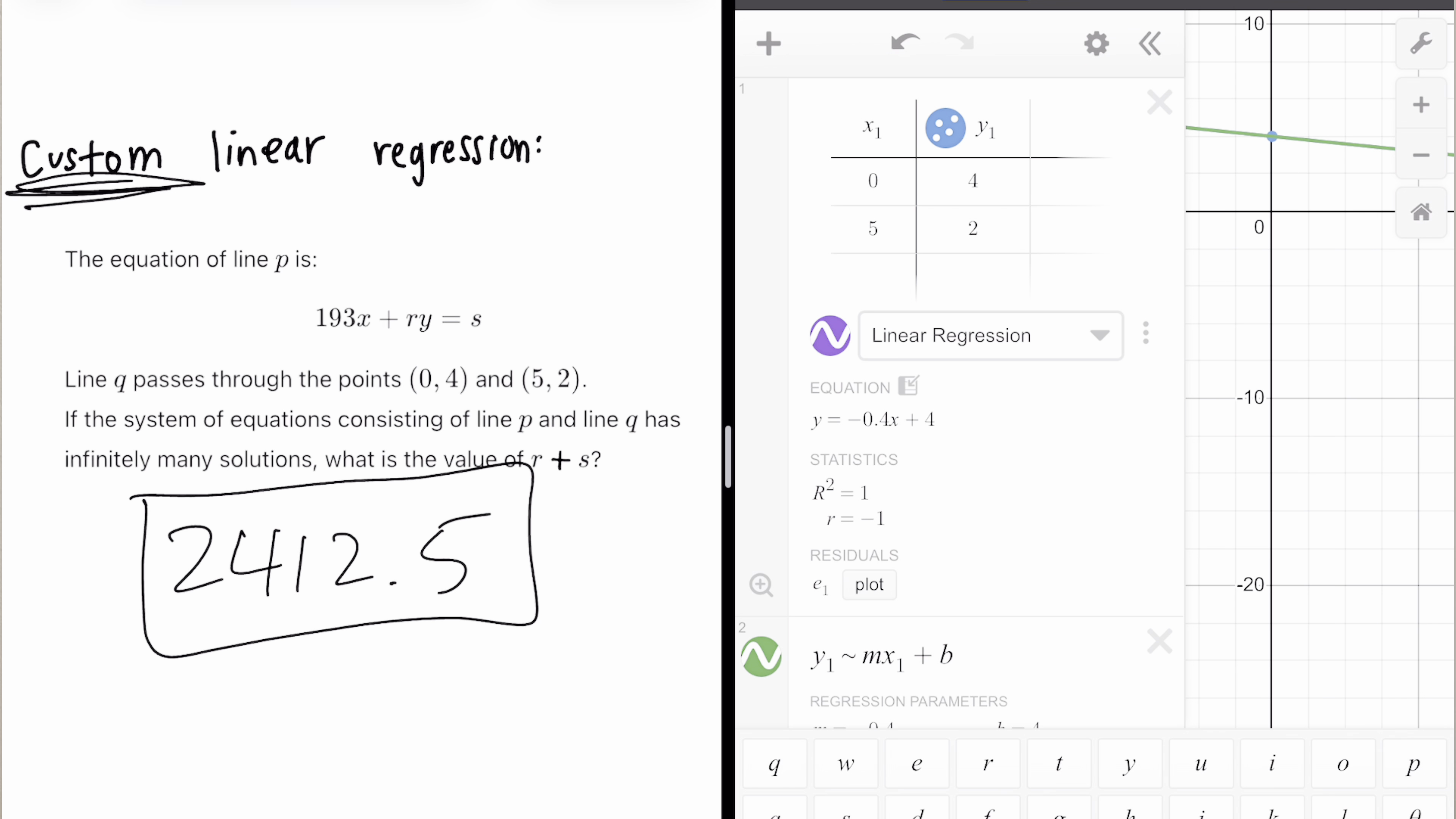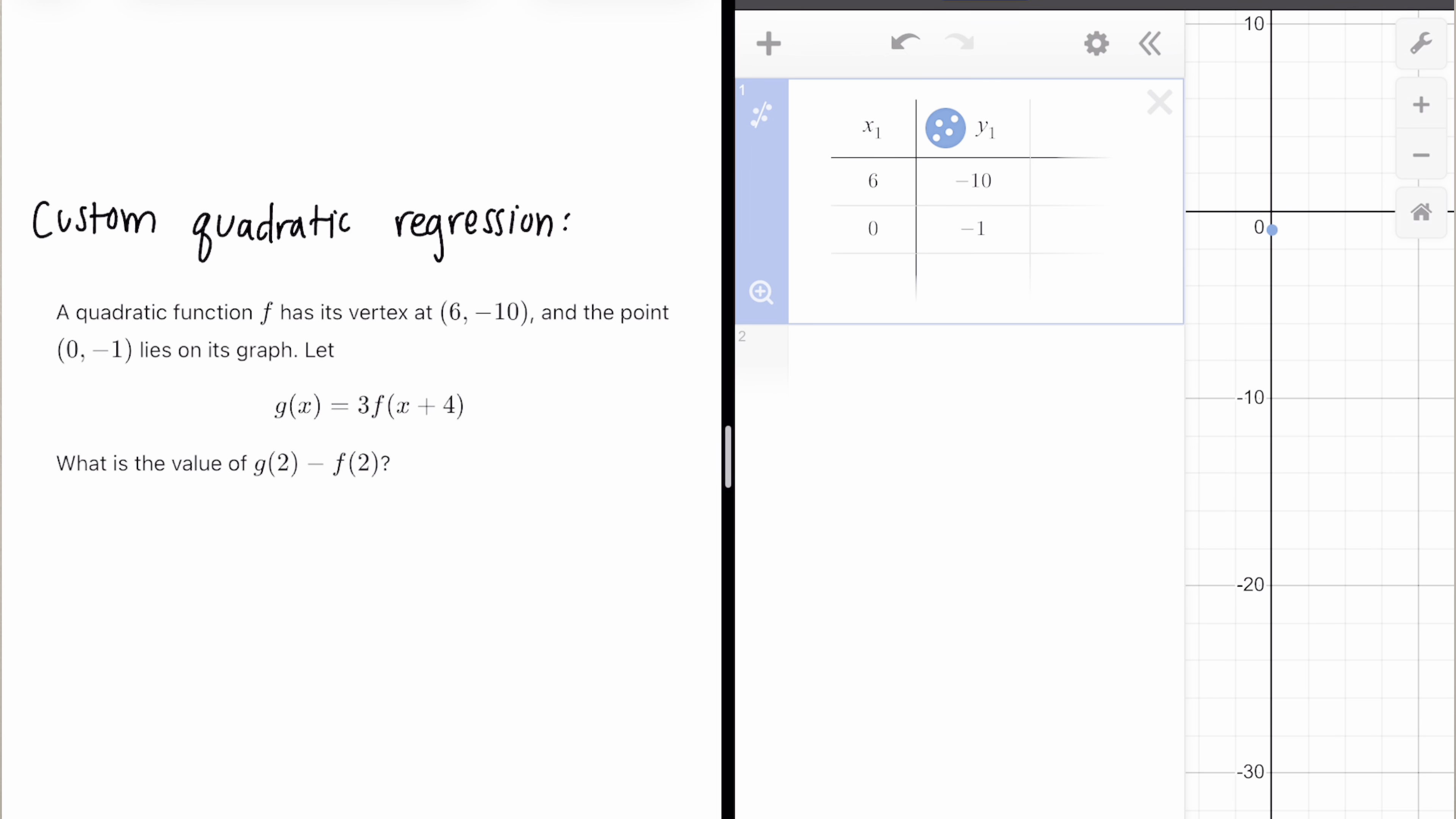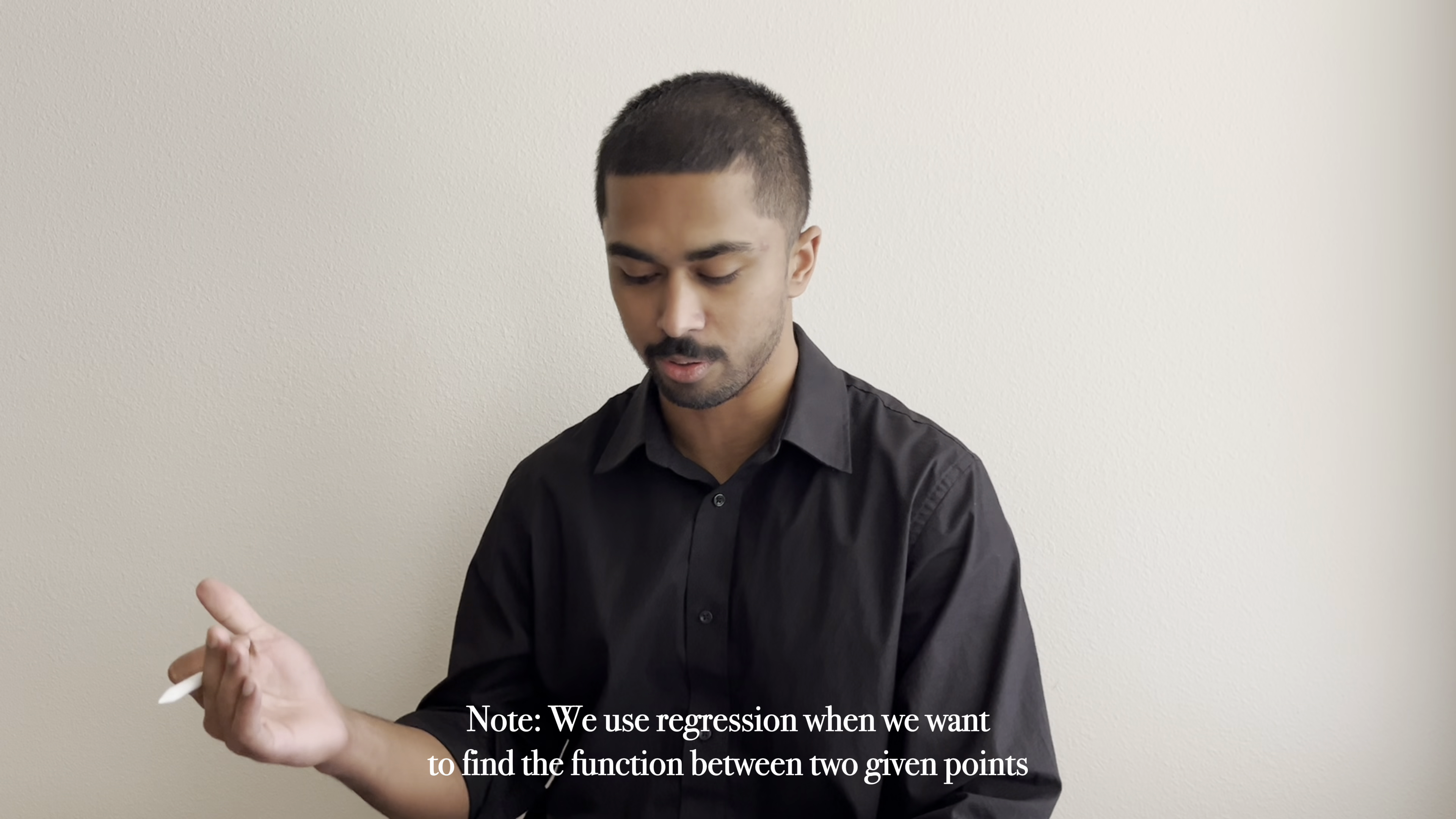Now we have two more custom regression examples that we can do. One for quadratic functions and one for exponential. You guys are going to like this one. A quadratic function F has its vertex at (6, -10) and the point (0, -1) lies on its graph. Let G(X) equal 3 times F(X) plus 4. What is the value of G(2) minus F(2)?